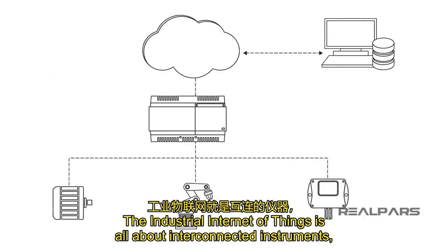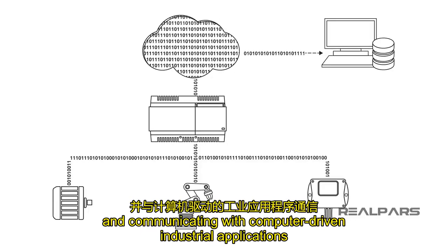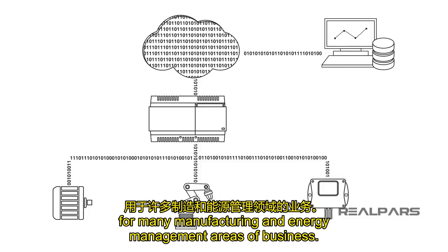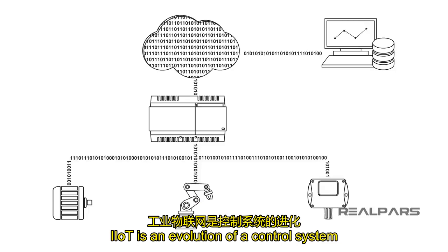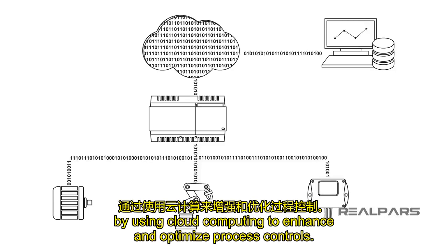The Industrial Internet of Things is all about interconnected instruments, sensors, and many other devices that are networked together and communicating with computer-driven industrial applications for many manufacturing and energy management areas of business. IIoT is an evolution of a control system that allows for a significant improvement in automation, by using cloud computing to enhance and optimize process controls.